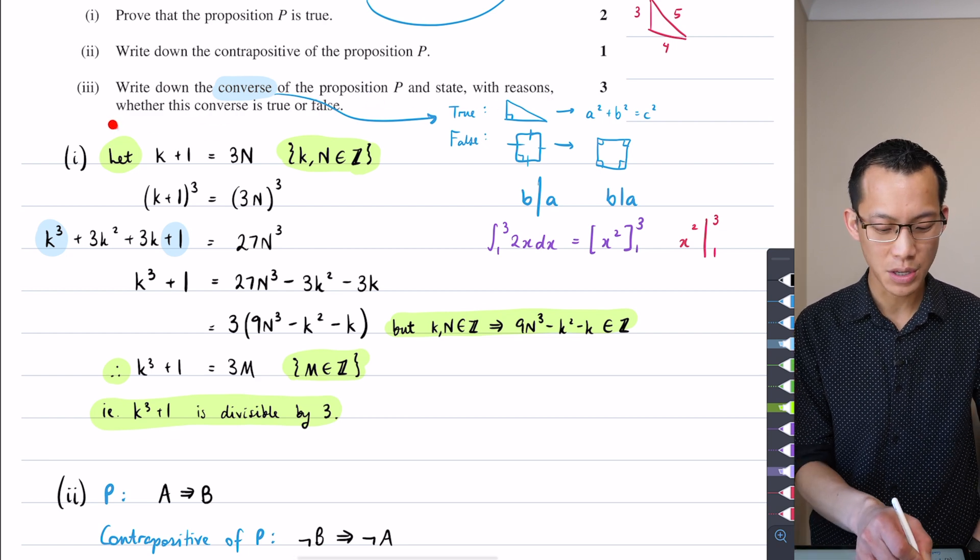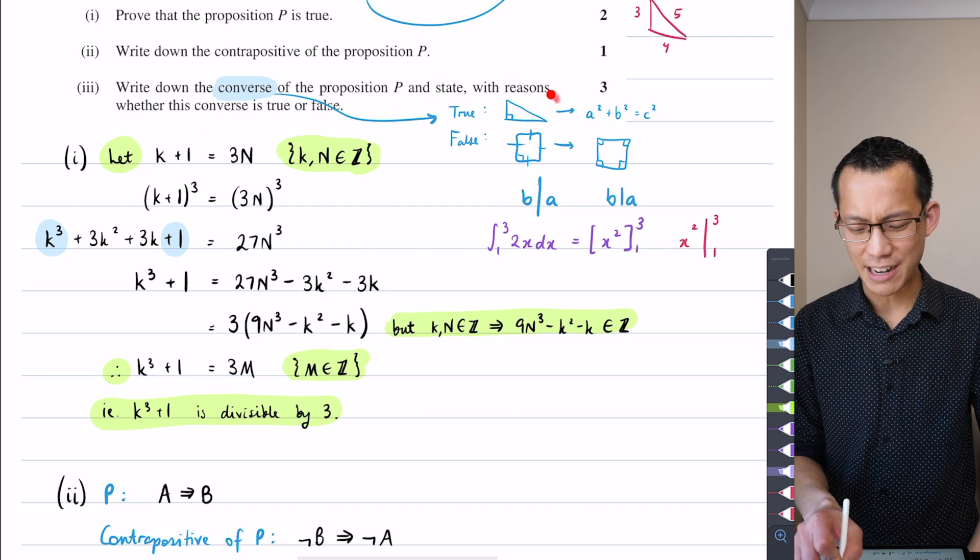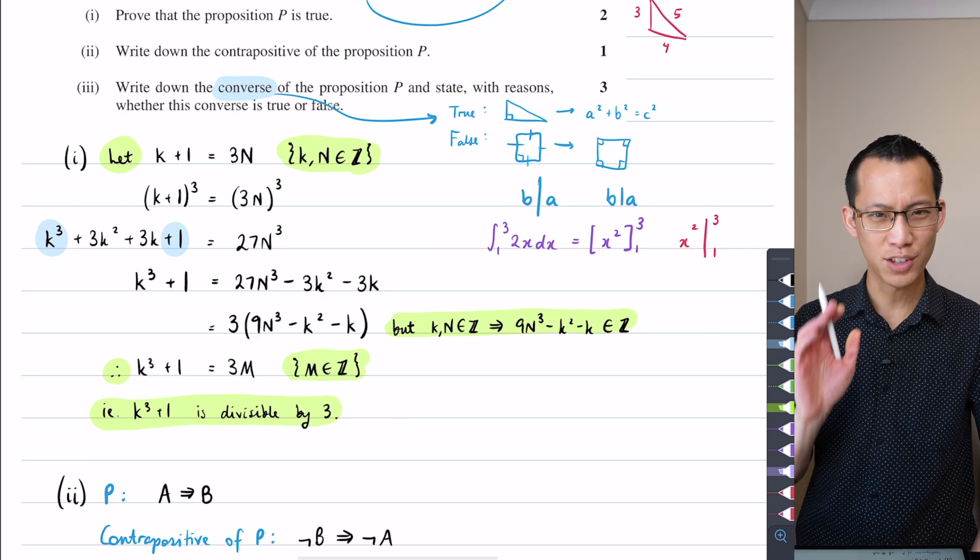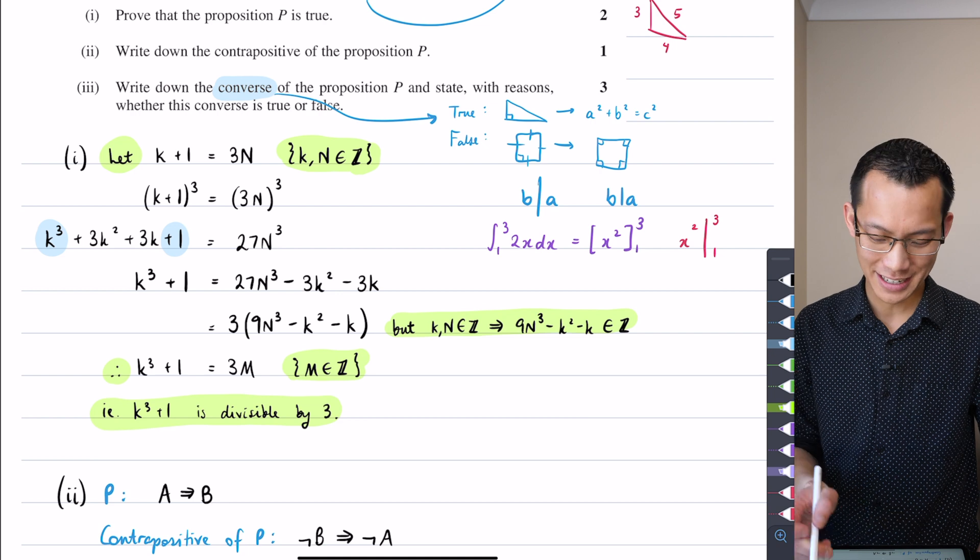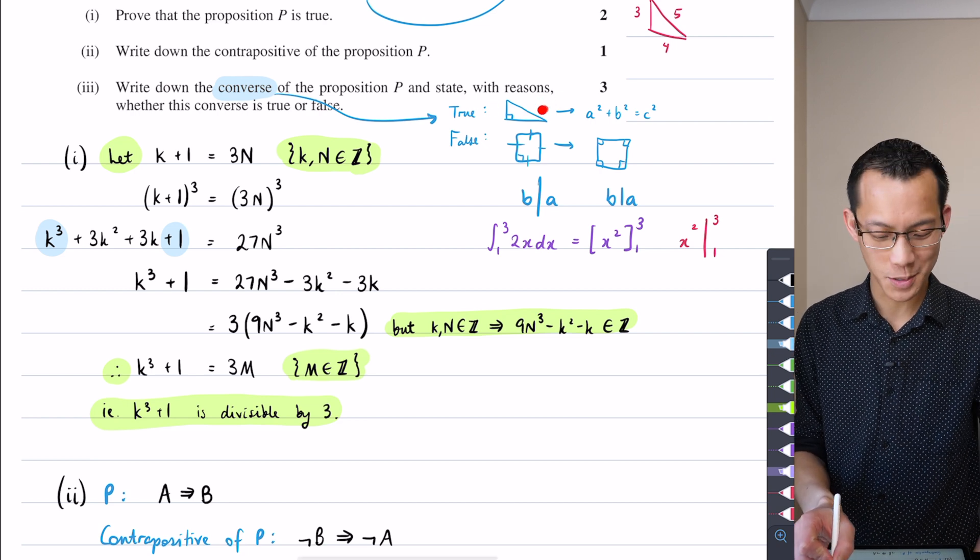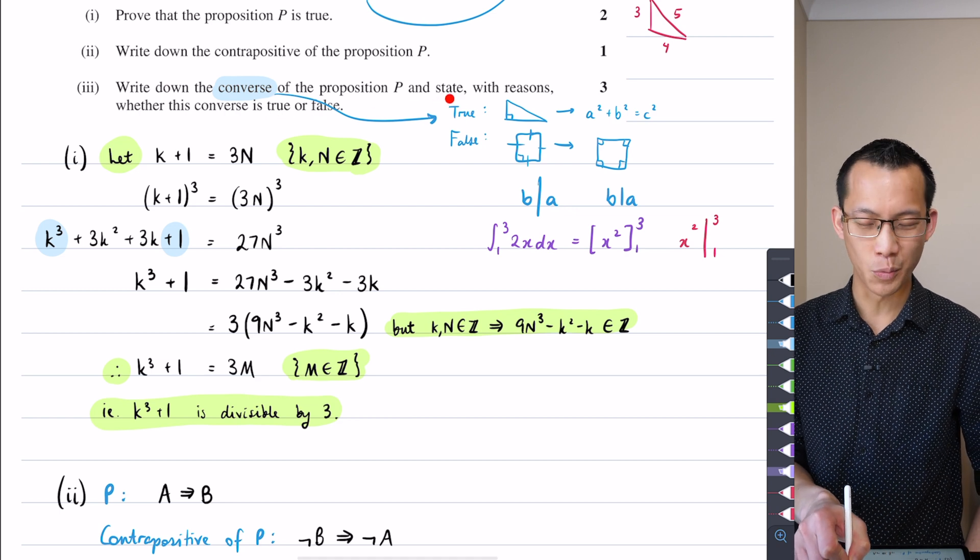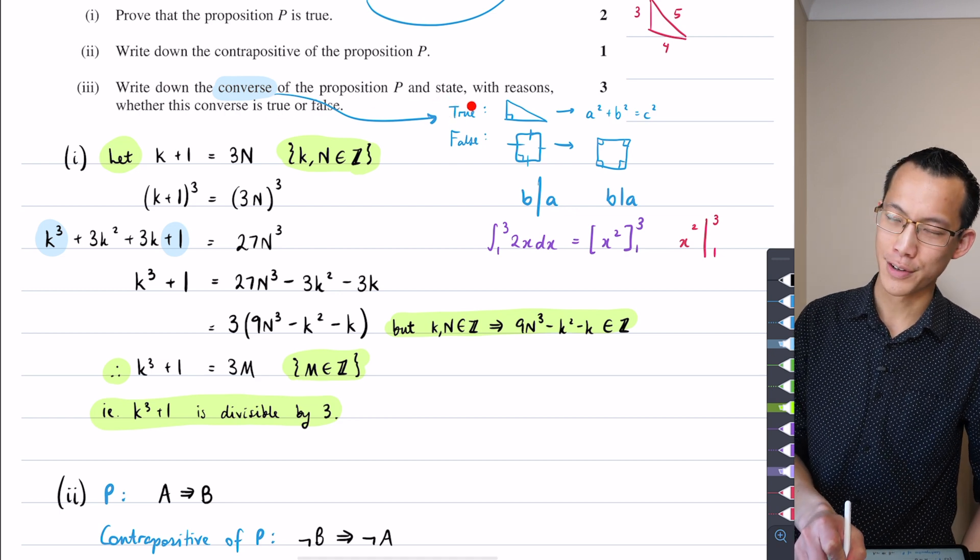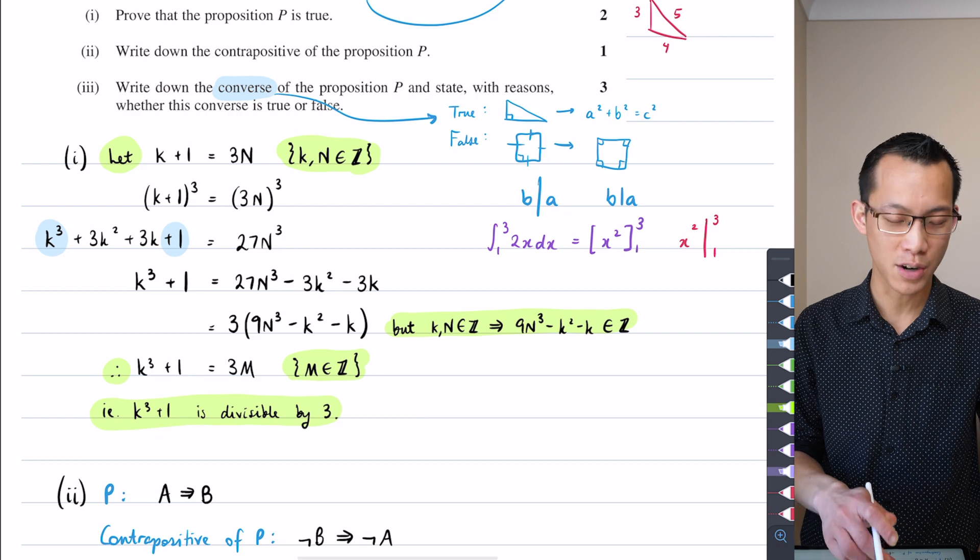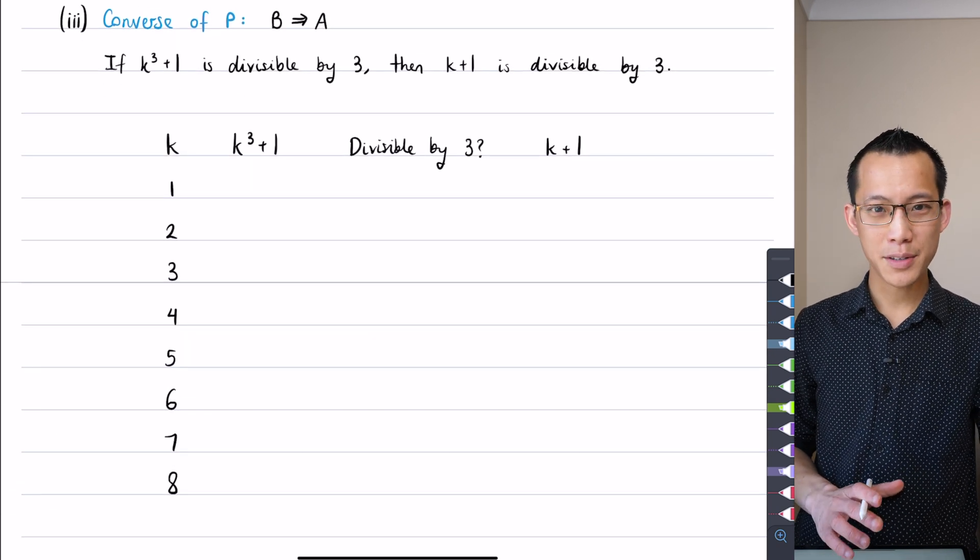Let's make sure we're in the same spot. The question is asking write down the converse, and then state with reasons whether this converse is true or false. They're trying to avoid some weird language around 'prove the thing true if true, prove the thing false if false.'